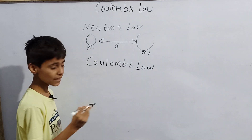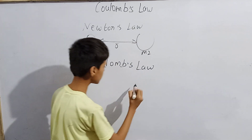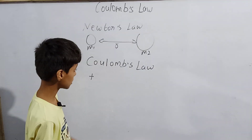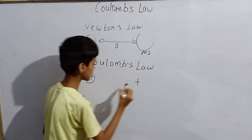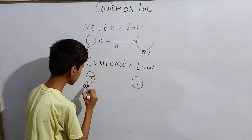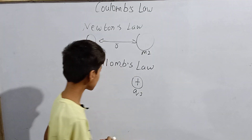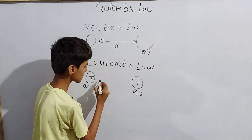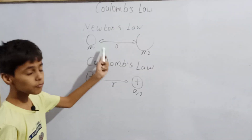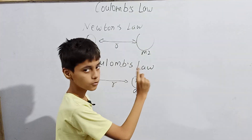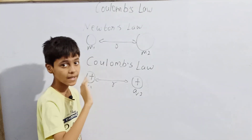Imagine we have two charges: one positive charge Q1 and another positive charge Q2. Just like in Newton's Law the distance between the two masses is R, here also let us imagine the distance between them is R. Newton's law said that force is proportional to the product of the masses of the two objects and inversely proportional to the square of the distance between them. Coulomb's Law is also very similar.